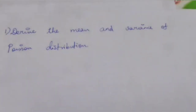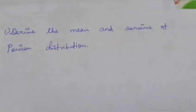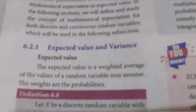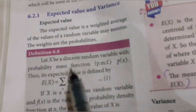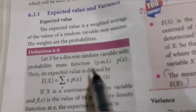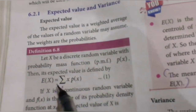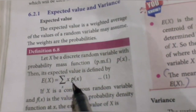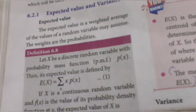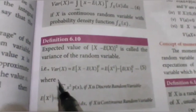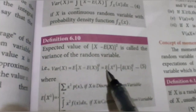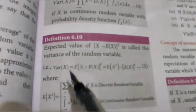Welcome to the class. In this video we are going to learn the derivation of mean and variance of Poisson distribution. Let x be a discrete random variable with probability mass function p of x. The expected value is defined as E of x equals summation x times p of x. Variance of x is equal to E of x squared minus E of x whole squared.